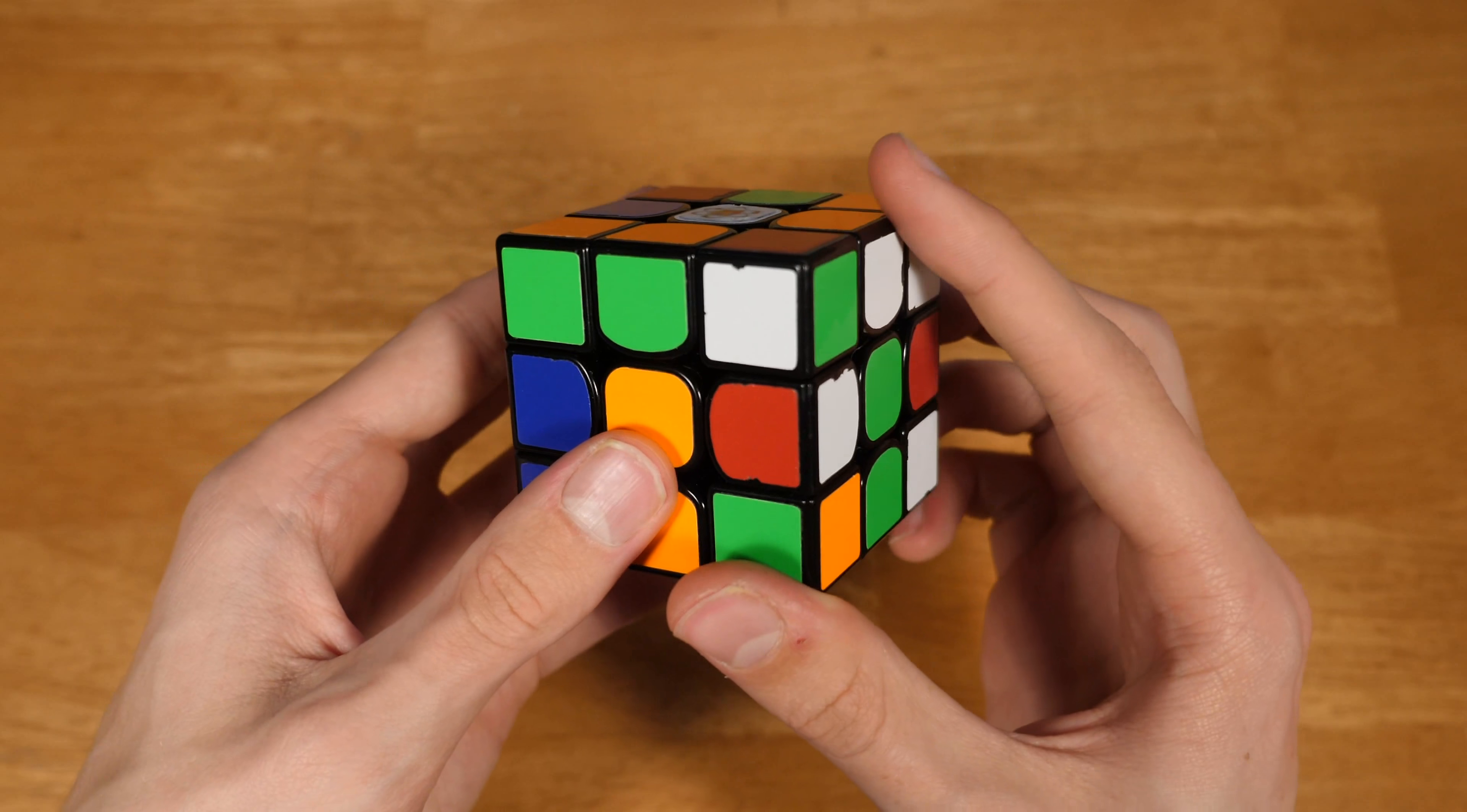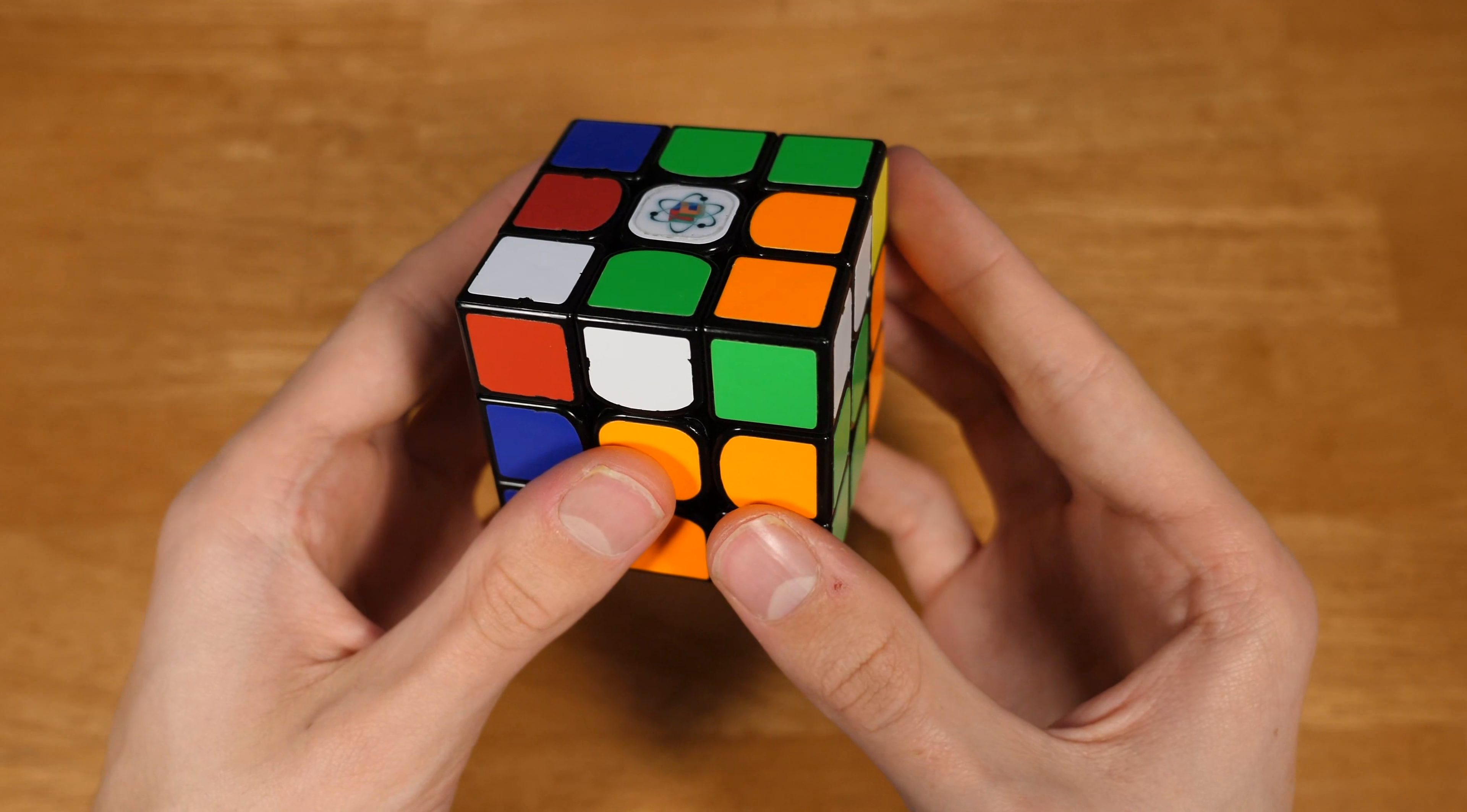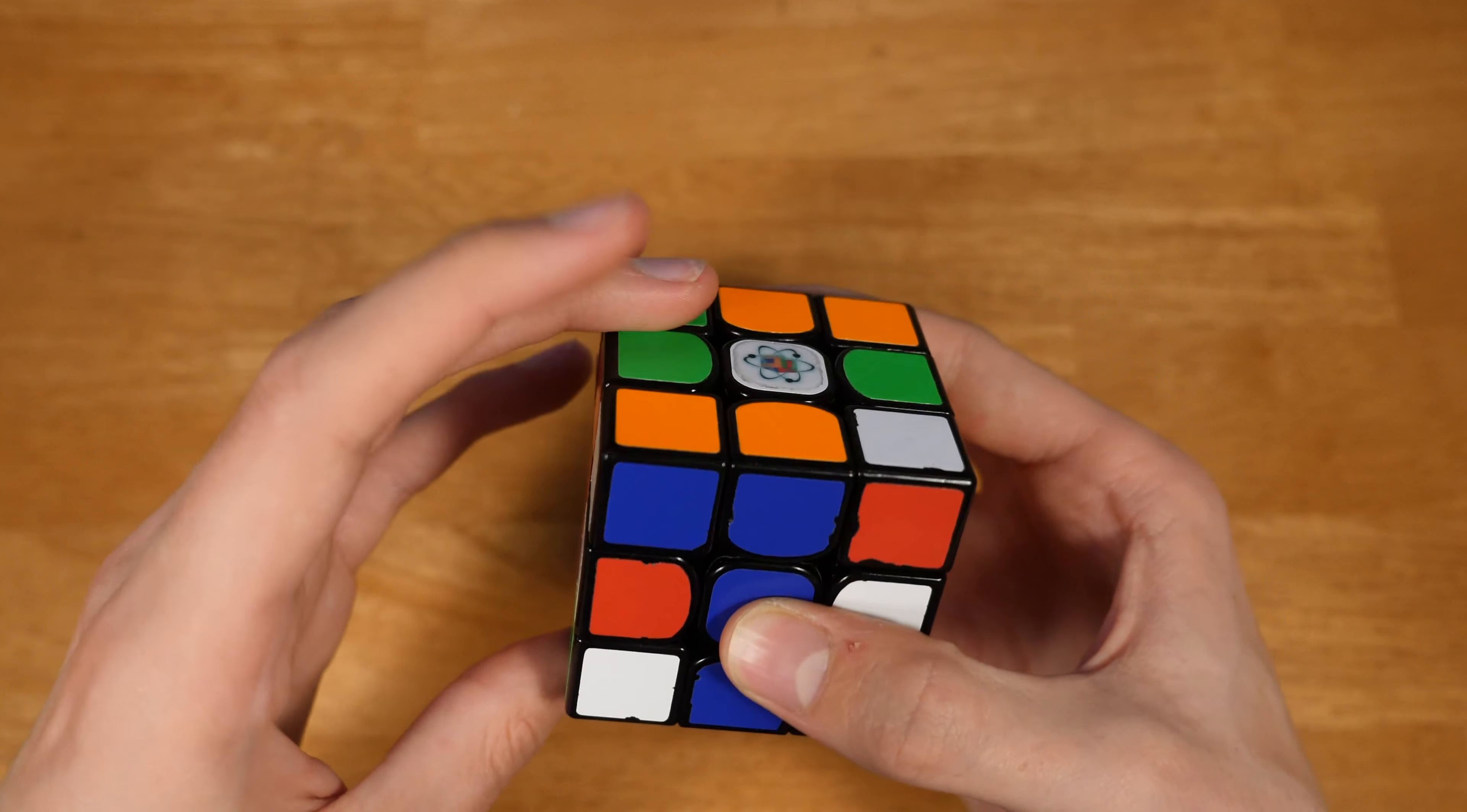And then this F2L is ready to go. You can kind of see here this F2L. And then here he probably should have done something like this, or just rotated this way and done like this.